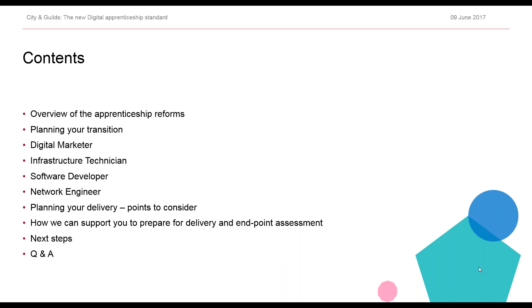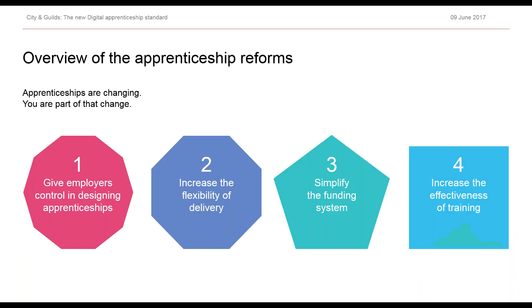In the next half an hour or so we're going to look at: a brief overview of the current reforms; what you need to consider when planning your transition; an overview of the current apprenticeship standards for which City and Guilds currently has assessment products; points to consider when planning your delivery; how we can support you to prepare for delivery and end point assessments; what services City and Guilds is able to offer; the next steps you need to take; and finally a brief question and answer session.